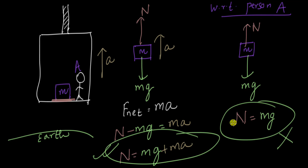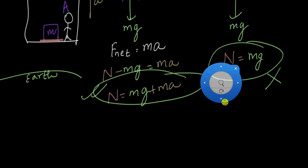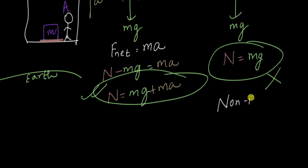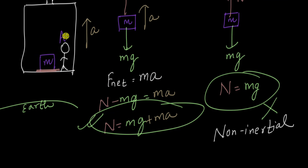This kind of frame of reference where the observer is accelerating is known as a non-inertial frame of reference. Whenever the observer is accelerating, Newton's laws don't seem to work — we cannot simply apply Newton's laws. Well, what can this person do? Should he give up all hope of Newton and his laws and stop trying to draw free body diagrams? Well, that is one way to go about it, but another way is to cheat.